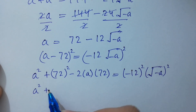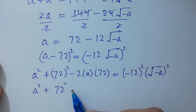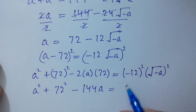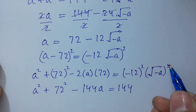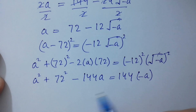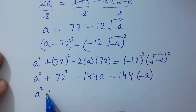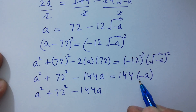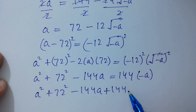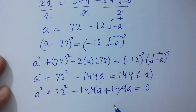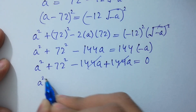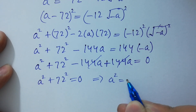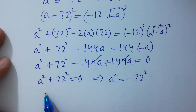A squared plus 72 squared minus 144a equal to 144 times minus a. The square cancels from the square root, giving minus a. So a squared plus 72 squared minus 144a plus 144a equal to 0. Both 144a terms cancel, and we have a squared plus 72 squared equal to 0. Therefore a squared equal to minus 72 squared. Take square root on both sides.